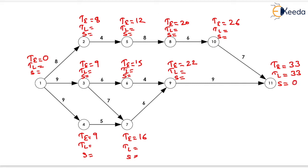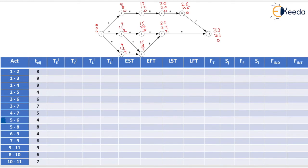Similarly, we can find TL and slack for all other events. Now we have found TE, TL, and slack for all events. We will now find free float, total float, independent float, interfering float, and the critical path. We have to fill a table where activity and activity time are shown. In the activity column, the first number shows the i-th node and the second shows the j-th node. We will write TE for event i.